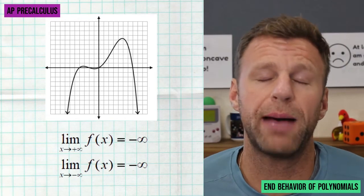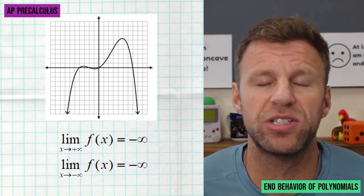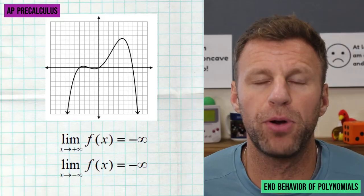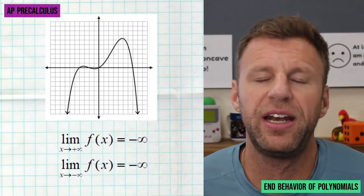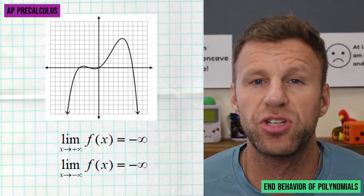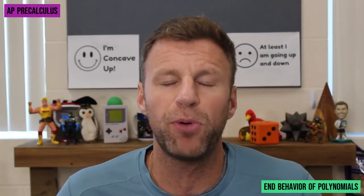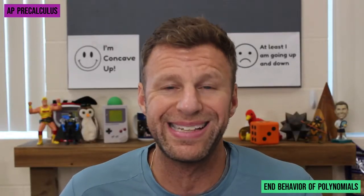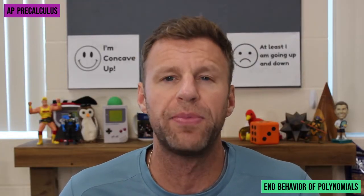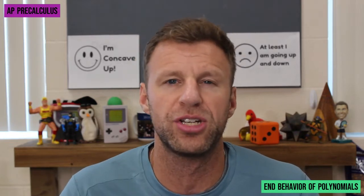Here is one more example where both ends of our function are going down towards negative infinity. Jumping right to limits: the limit as x approaches infinity is negative infinity, and the limit as x approaches negative infinity is also negative infinity. Nice and simple. When you can see a graph and you can see the ends of the function, it's pretty simple to describe the end behavior — just make sure you're familiar with this new limit notation.